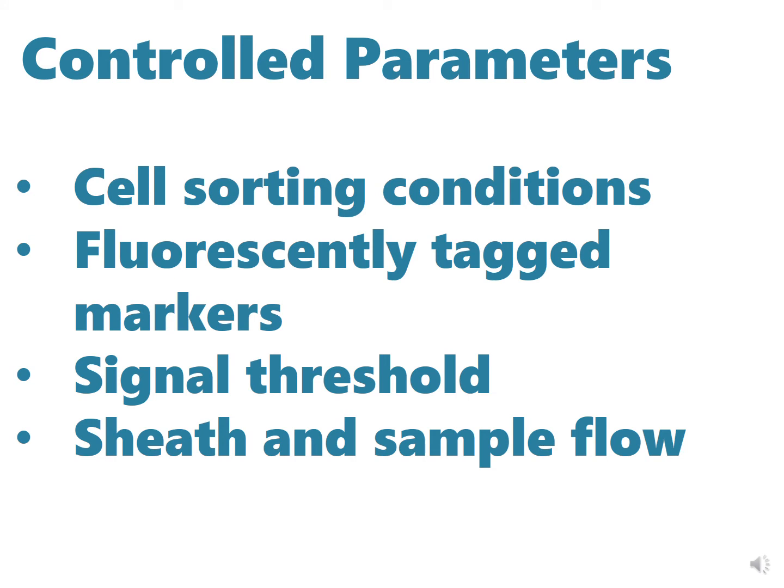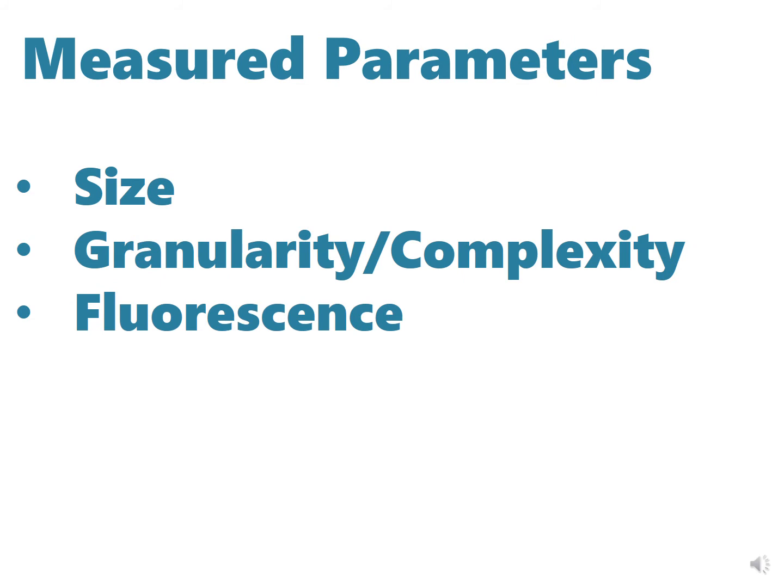Overall in this process, the user is able to control cell sorting conditions as well as fluorescent markers that are tagged. They can also determine the signal threshold as well as the sheath and sample flow. Measured intensity values will provide us with information on size and cell complexity. With the use of a fluorescent probe, we can increase the amount of parameters that's available to include certain cell populations or certain types of receptors that are on a cell.